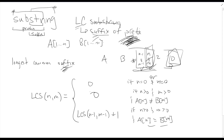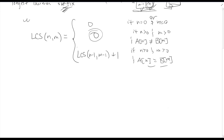Some of you might notice that this recursive definition doesn't have overlapping subproblems, which means we might not strictly need dynamic programming. That would be fine if we were only looking for the longest common suffix between two strings — but that's an easy problem. We want the longest common suffix between all possible pairs of prefixes, so we do need to fill in the entire matrix. The answer is not necessarily in position [N][M]; it's stored somewhere in the matrix, and we don't know where in advance.